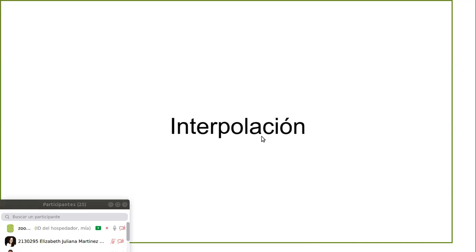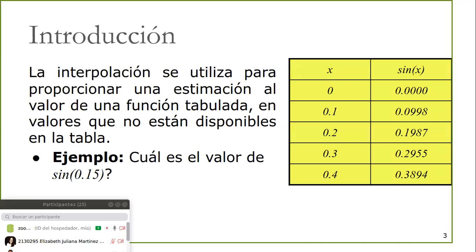Con la interpolación casi siempre estamos hablando de polinomios, y lo que buscamos es que la función pase por todos los puntos que pertenecen a un conjunto de datos. Nosotros interpolamos para proporcionar estimaciones a diferentes valores que no conocemos, a partir de un conjunto tabulado de datos. Por ejemplo, acá tenemos un conjunto de datos muestreados desde 0 hasta 0.4 con un espacio de 0.1, y el correspondiente valor de seno de x.